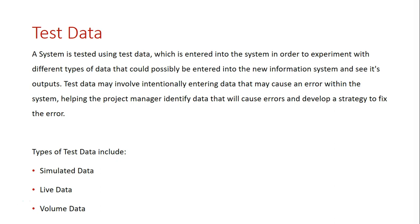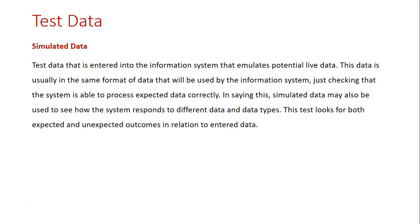Simulated data tests use data that is expected to be entered into the system. It is established by the project team, who enter in different types of data they expect the system to receive. This data is usually in the same format as data that will be used by the information system, checking that the system can process expected data correctly. The team may also enter unexpected data to see how the system responds — whether it produces an error or crashes. For example, if a system is expecting a number and you put in a letter, the system will crash unless something is programmed to handle that, such as an error message or a verification method. Simulated data tests are looking for both expected and unexpected outcomes in relation to the entered data.